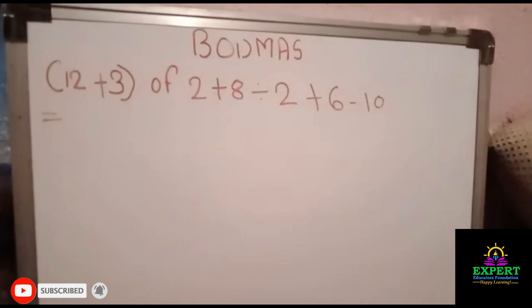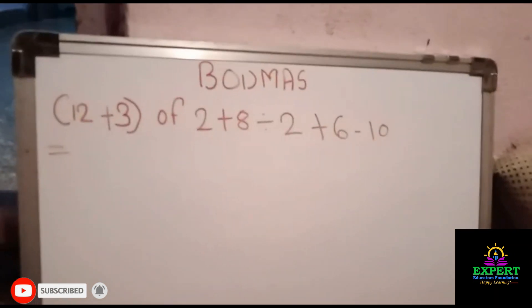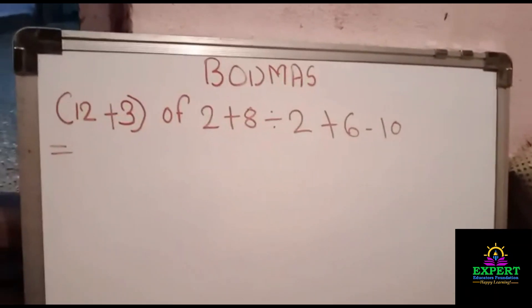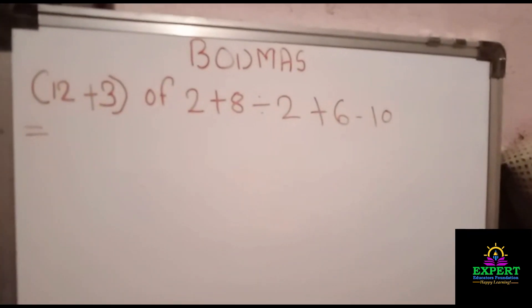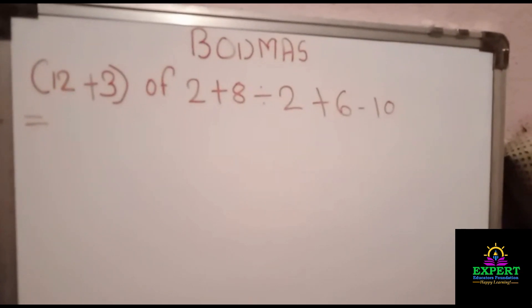So friends, now I have taken the example. It is bracket 12 plus 3 of 2 plus 8 divided by 2 plus 6 minus 10.